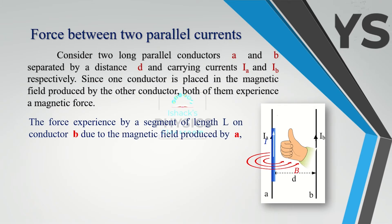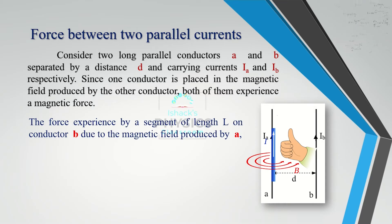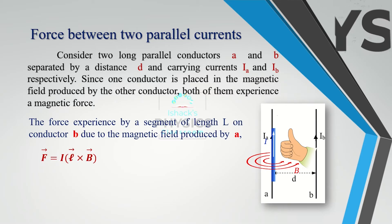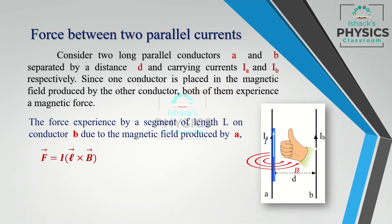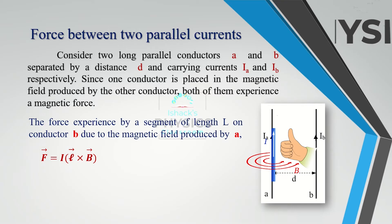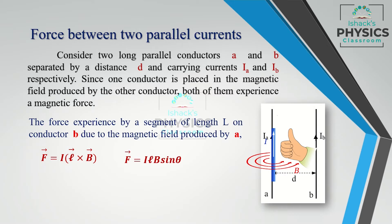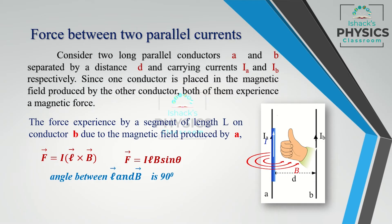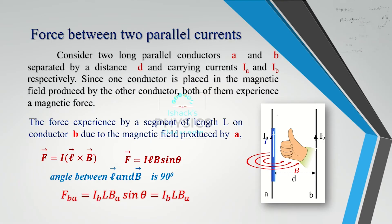The force experienced by a segment of length L on conductor B due to the magnetic field produced by A: we use F = I(L × B). The vector product gives LB sinθ. Since the length is along the current direction and the magnetic field are mutually perpendicular, the angle between L and B is 90°, so sin 90° = 1.